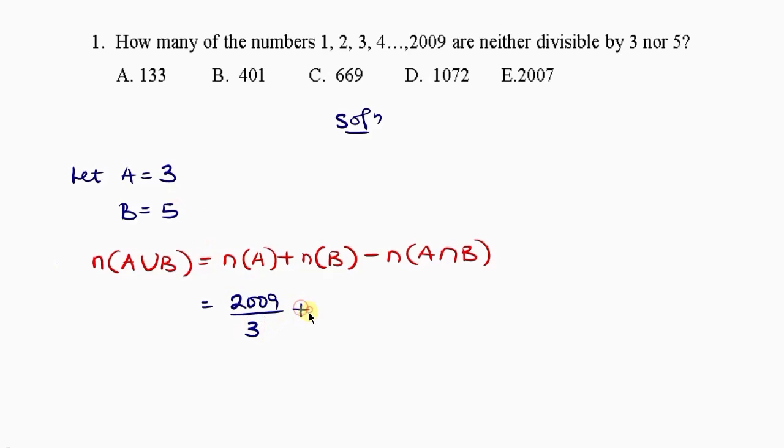Plus cardinality of B means we take the last item which is 2009 and divide it by B. What is our B? 5.